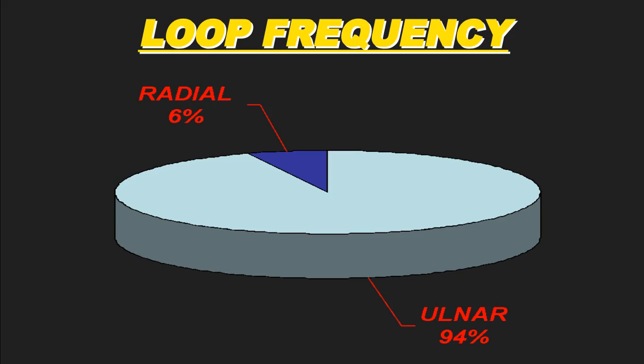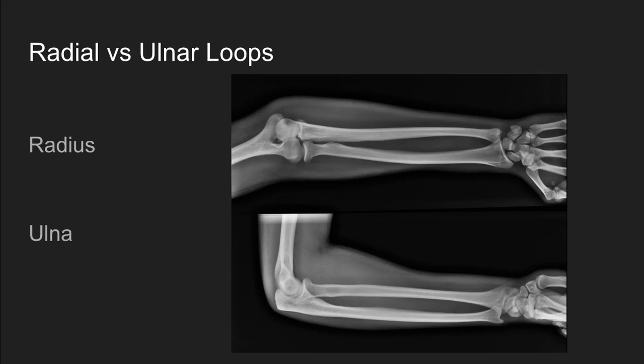In fact, 94% of loops are ulnar — only about 6% of loops are radial. If you remember, we talked about the fact that about 65% of all fingerprints are loops. And since 94% of all loops are ulnar, that means the majority of fingerprints are actually ulnar loops. That's the most common fingerprint pattern you're going to come across. You will come across radial loops sometimes, though, so we do need to understand the difference between radial and ulnar loops.